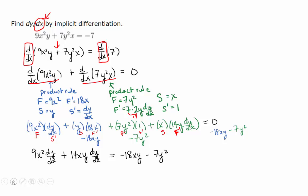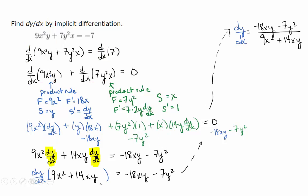Now, key step. Key step when you're using implicit differentiation. What do I do next? Yeah, factor out dy dx. So factoring out dy dx from these two terms here, we're left with 9x squared plus 14xy. And that allows us to divide, so we get this expression.